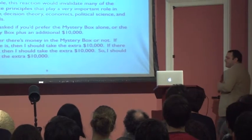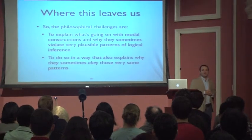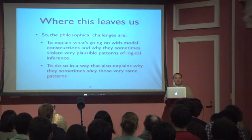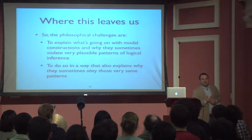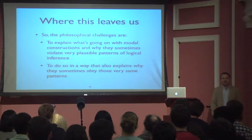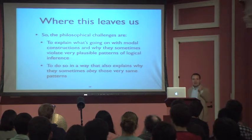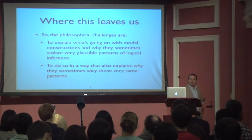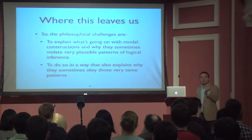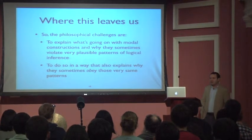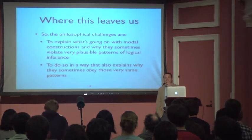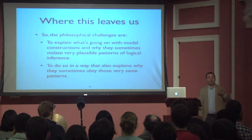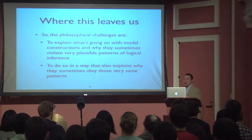So where does this all leave us? It leaves us with two philosophical challenges. The first is to explain what's going on with these modal constructions and why they sometimes violate these very plausible patterns of inference. The second is to do so in a way that explains why they sometimes obey those very same patterns. What is going on with conditionals that involve modal consequents — making them behave really weirdly in the miners case, the rain case, and the marble urn case — and yet behave perfectly appropriately in dominance principle reasoning like the Newcomb two-box case? I have some suspicions about how that might go, but I think it suggests there's a really deep difference between modal and non-modal discourse. I only have 15 minutes, so that's all I'll have to say for tonight — thank you very much.